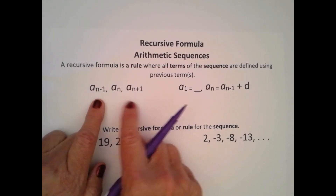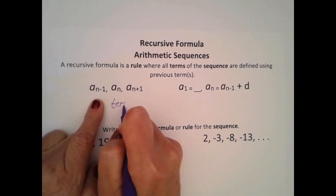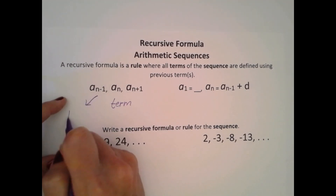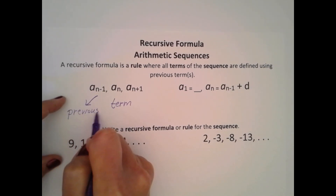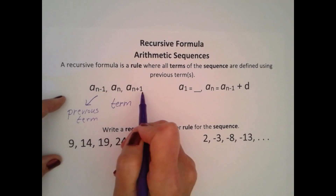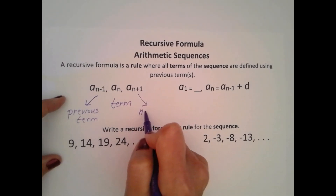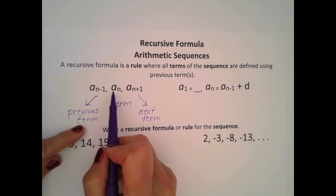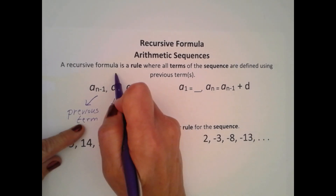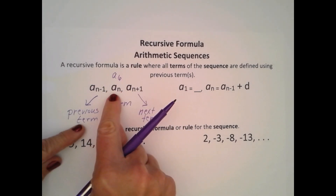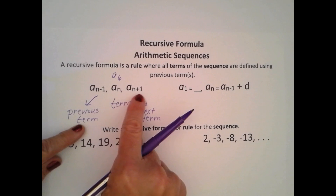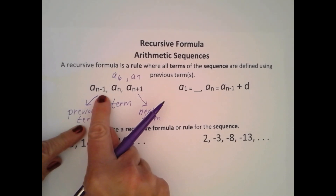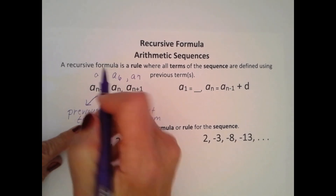Look at this notation. a sub n is any term in the sequence. a sub n minus 1 is the previous term and a sub n plus 1 is the next term. To get you to see this better, I'm going to use an example of a sub n as a sub 6. If this is a sub 6, my next term would be a sub 6 plus 1, or a sub 7. My previous term, a sub 6 minus 1, which would be a sub 5.